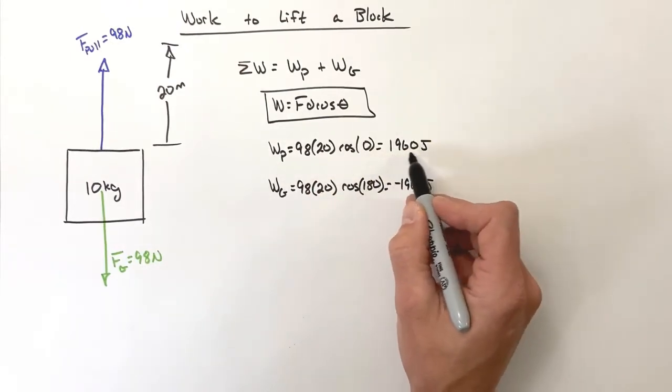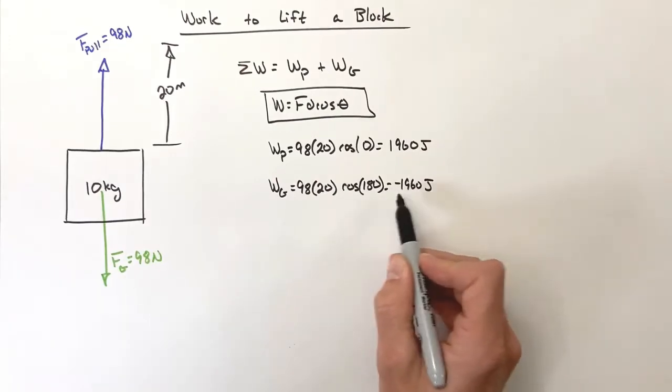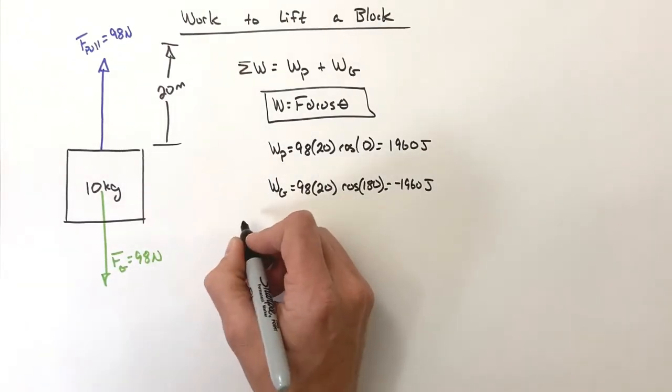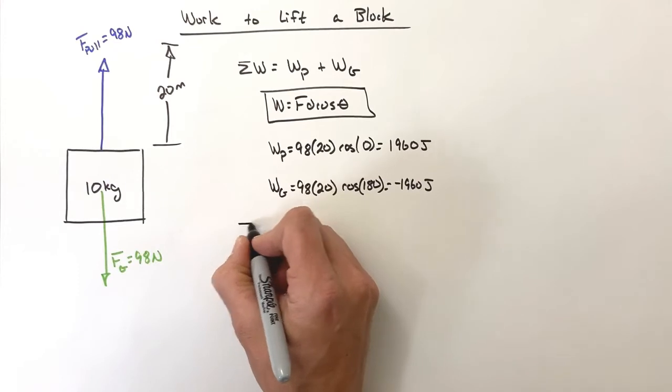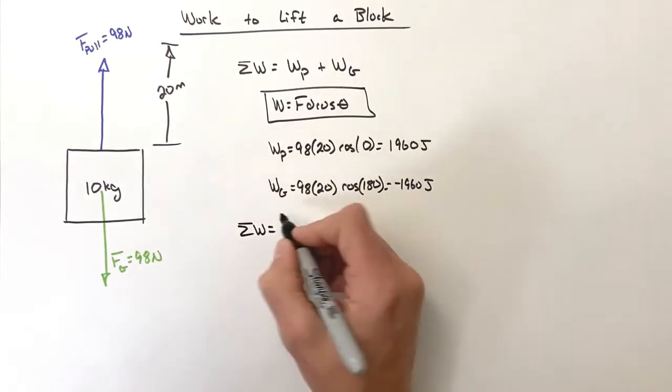But from start to finish in this problem, we see the pull force does 1960 joules of work, the work by gravity does negative 1960 joules of work.